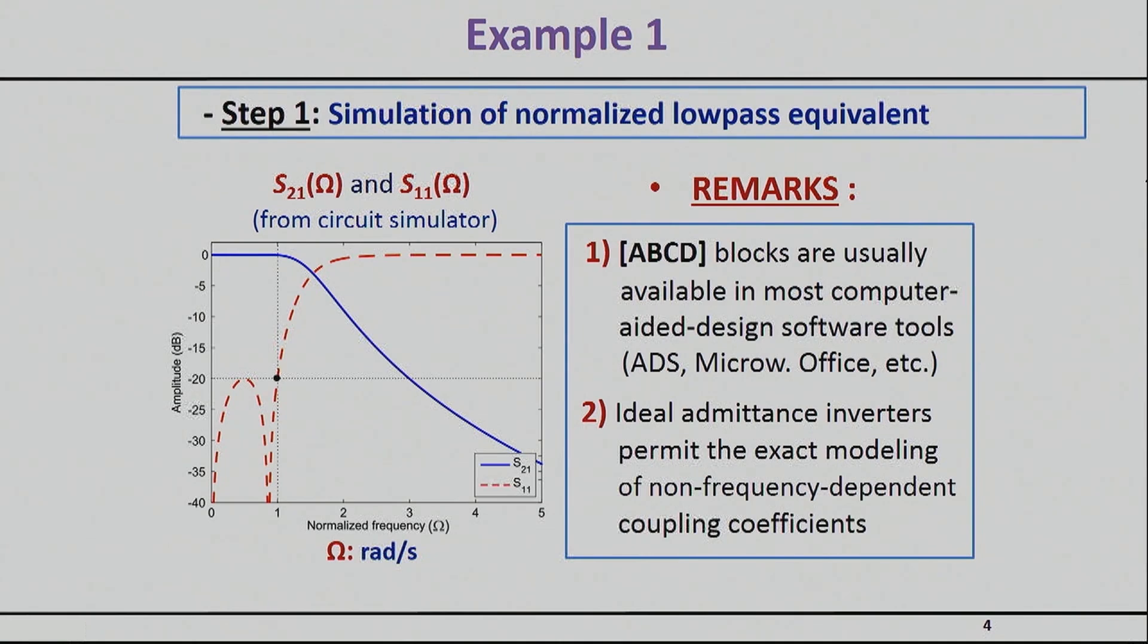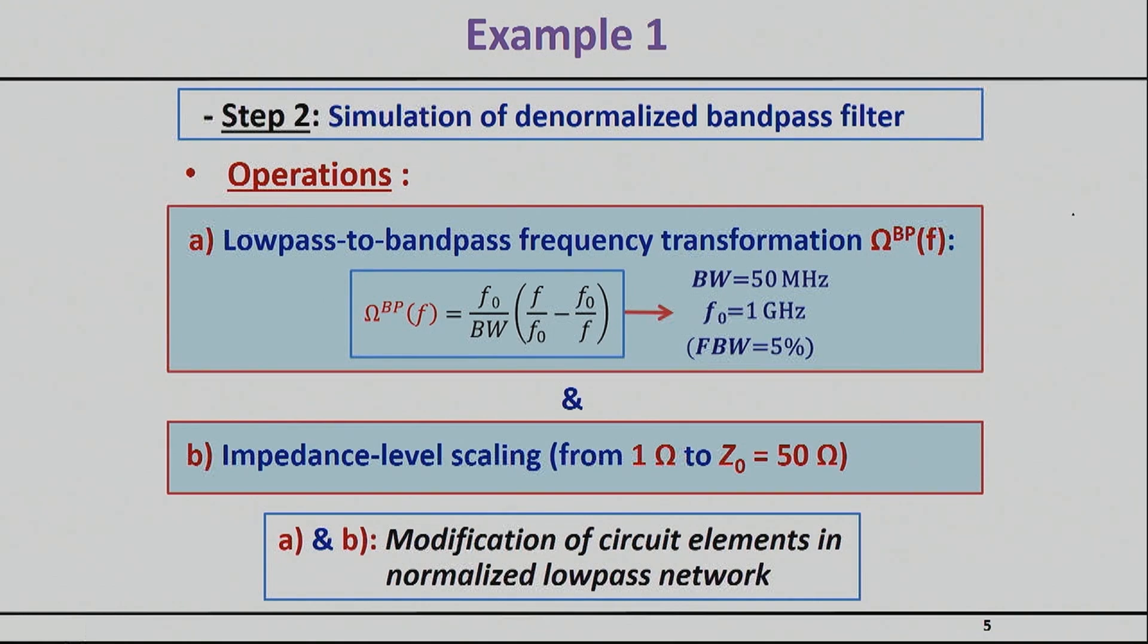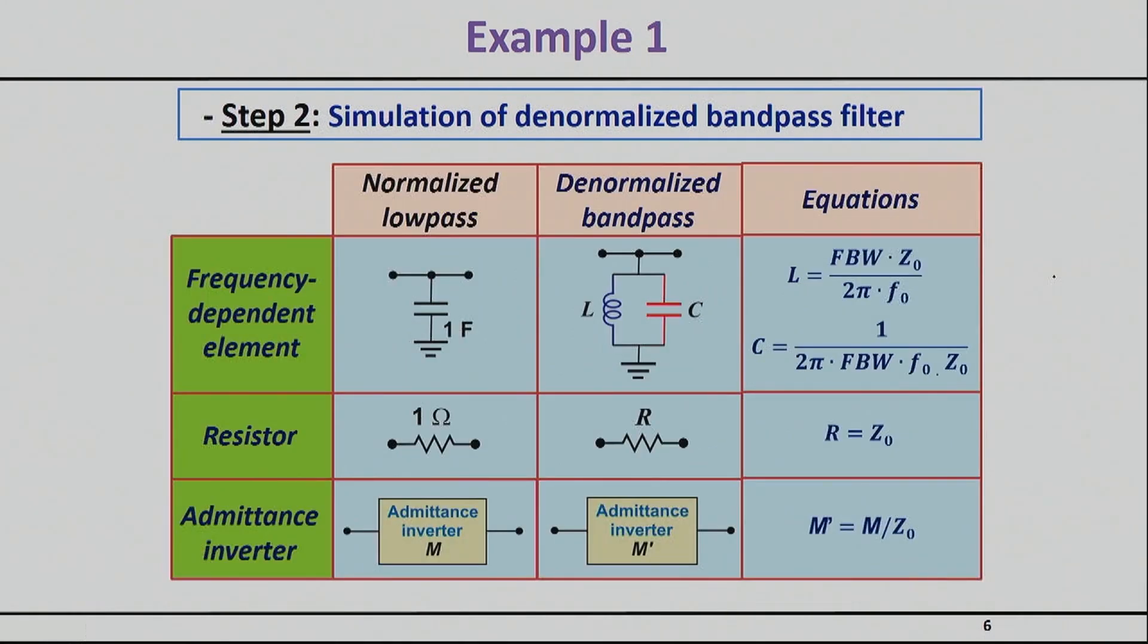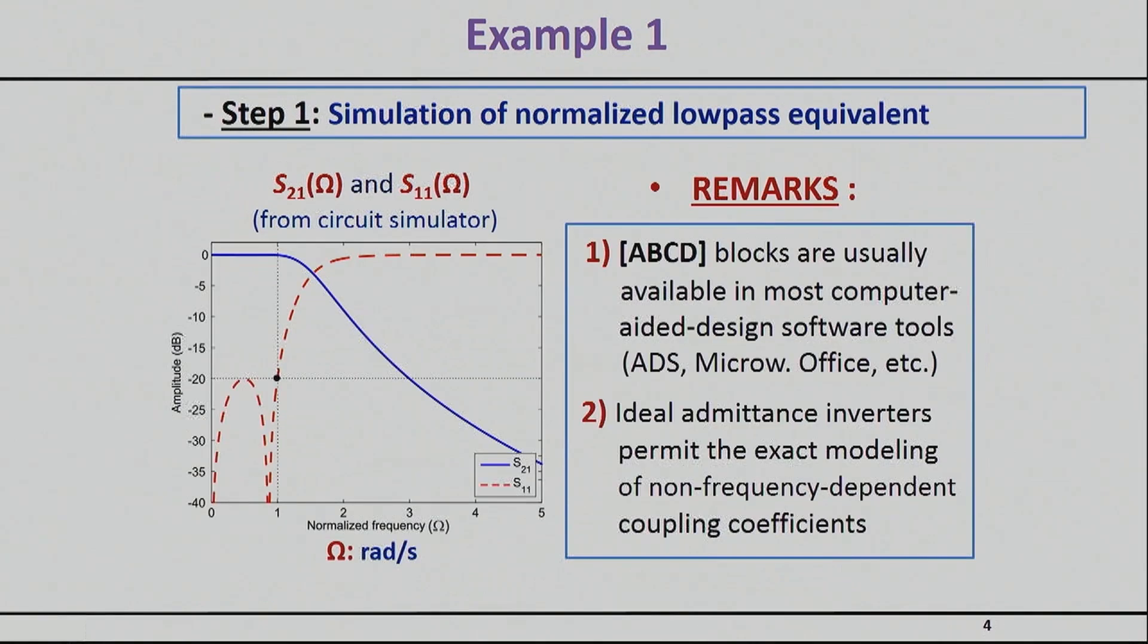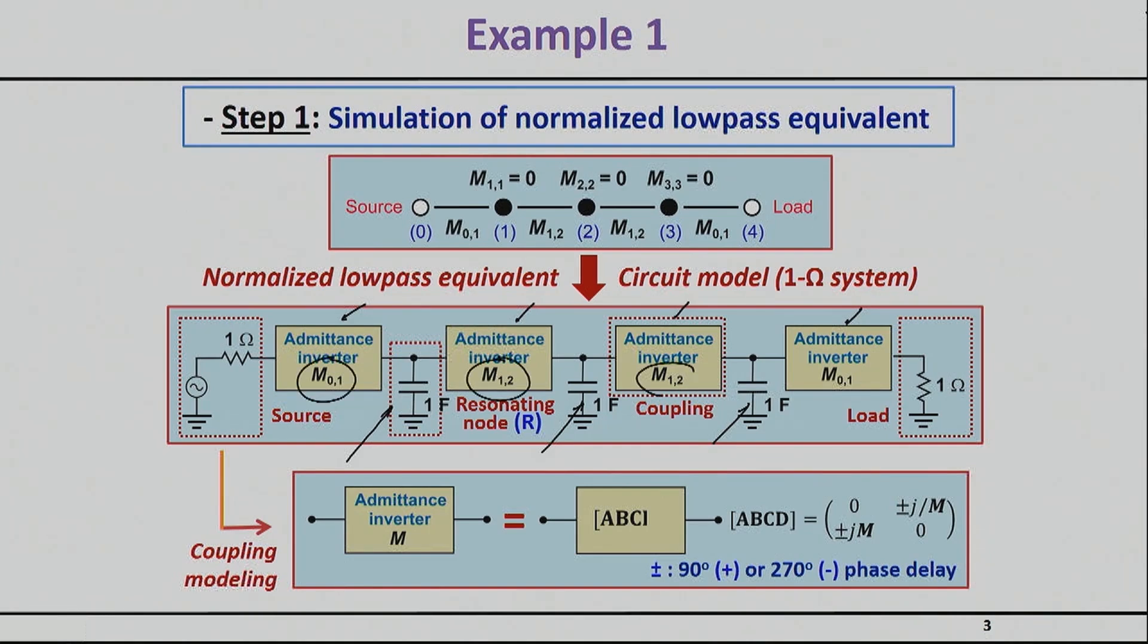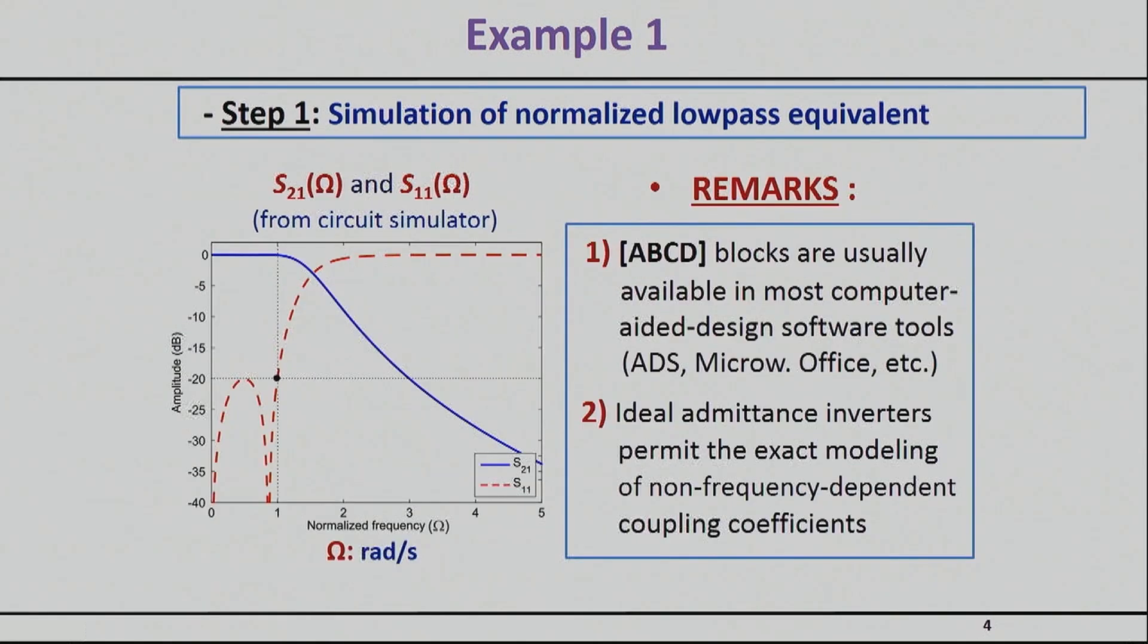Once you have the low pass prototype, as we've learned before, you can apply this bandpass transformation to denormalize things and you also need to do the correct impedance scaling. For this example the impedance scaling will go from 1 to 50 ohms. This is an explicit table that shows you exactly how the parameters will change. Our normalized elements will become LC resonators, considered ideal shunt LC resonators, and the values for both LC are given here where Z0 is our 50 ohm impedance.